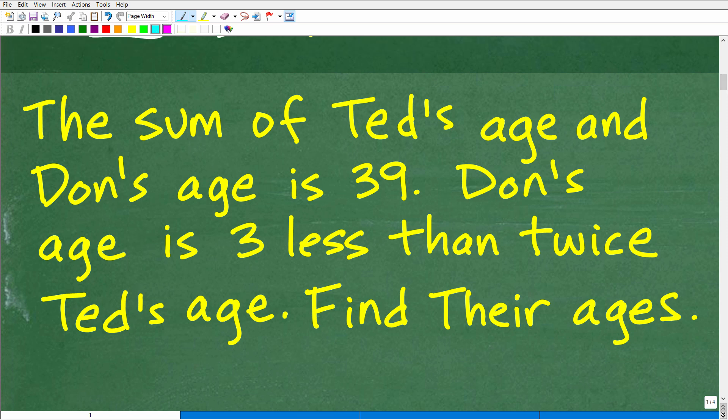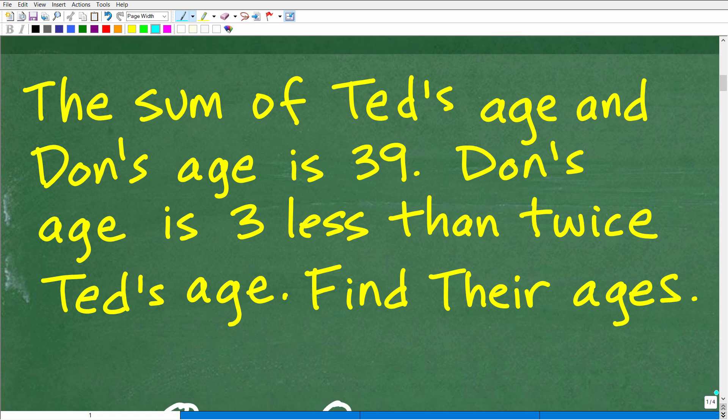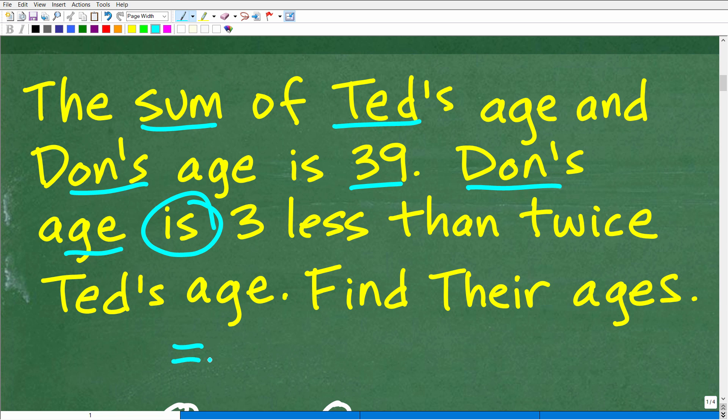Okay, so with all that being said, let's go ahead and get into the actual problem here. So again, we have Ted and Don. And we know that the sum, if we add their ages up, it's going to be 39. And then we know that Don's age is, now anytime you see 'is' in a verbal sentence, in terms of mathematics, it's always the equal sign. So Don's age is or is equal to three less than twice Ted's age.